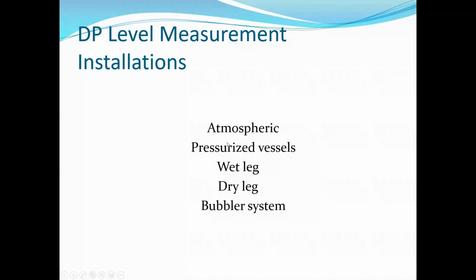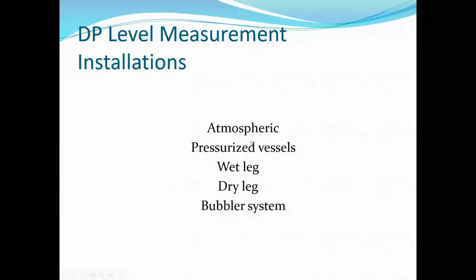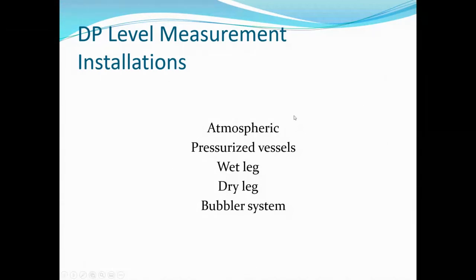Here's a list of five different types of level measurements we can use with a differential pressure transmitter: atmospheric level measurement, pressurized vessel level measurements, wet legs, dry legs, and bubblers. We'll look at each of these individually in separate slides. We'll do math for atmospheric, pressurized, and wet leg examples — dry legs are basically the same as pressurized, and bubblers are basically the opposite.